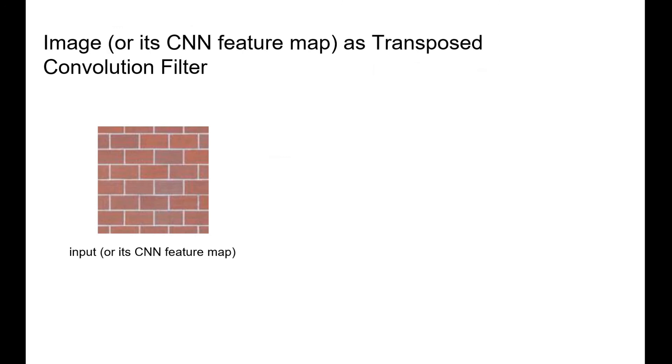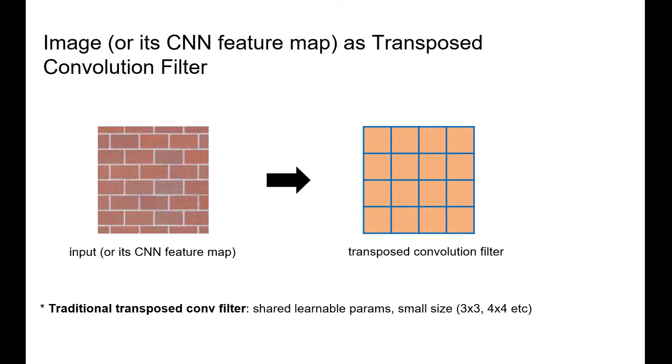The key and novelty of the method is to directly use the input texture's feature map as the transposed convolution filter. In this way, the transposed convolution output would be the assembling of the input textures. This is different from the traditional way how transposed convolution is used.